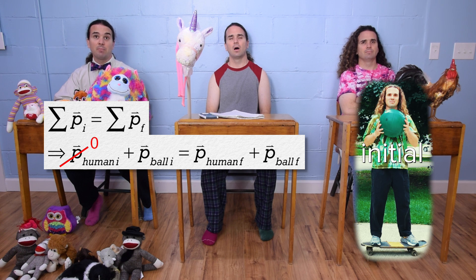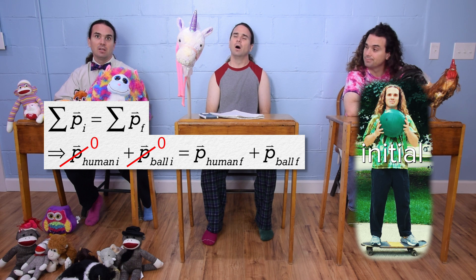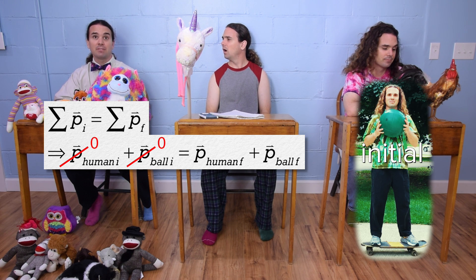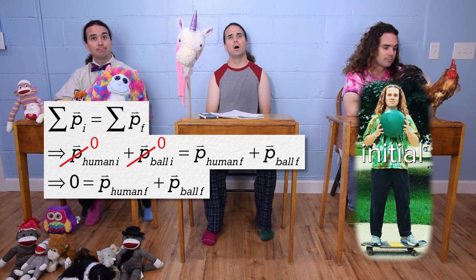The initial velocity of the ball is also zero, so the initial momentum of the ball is zero. Therefore, the total momentum of the system initial, or before the explosion, is zero. Correct.